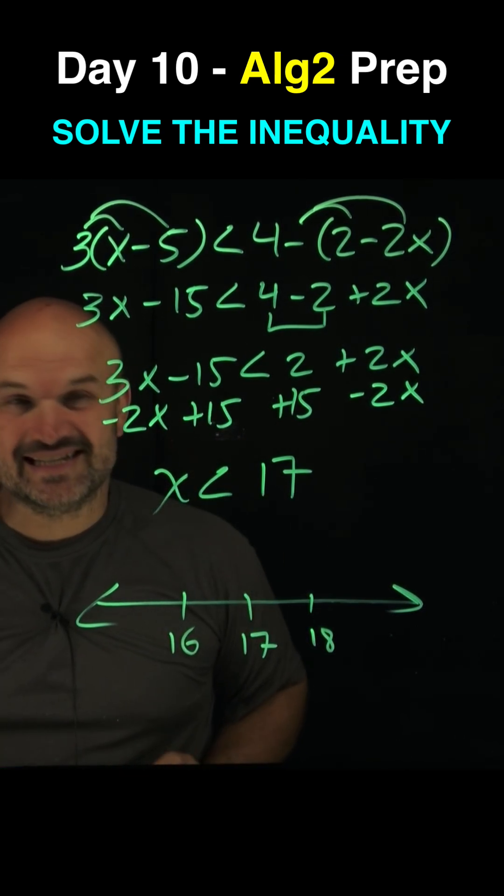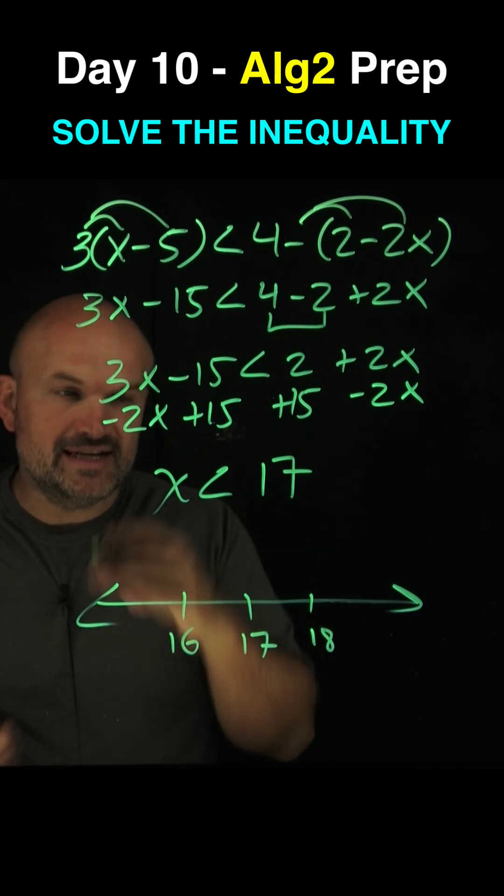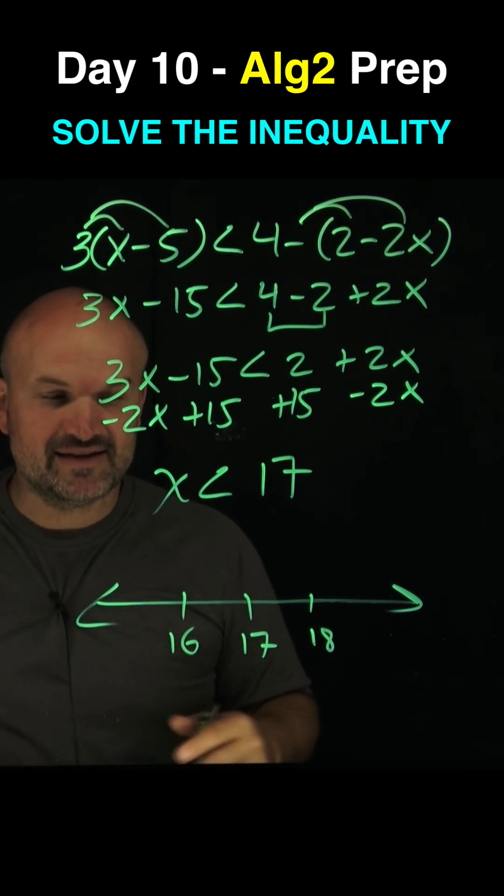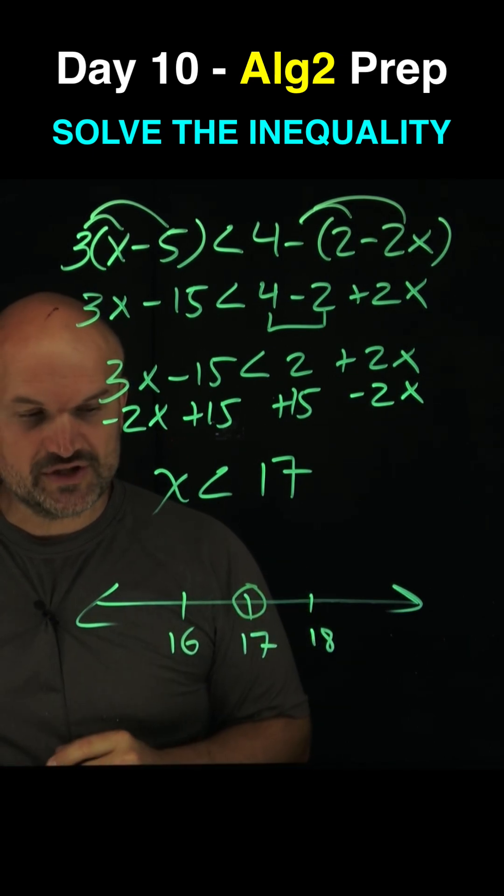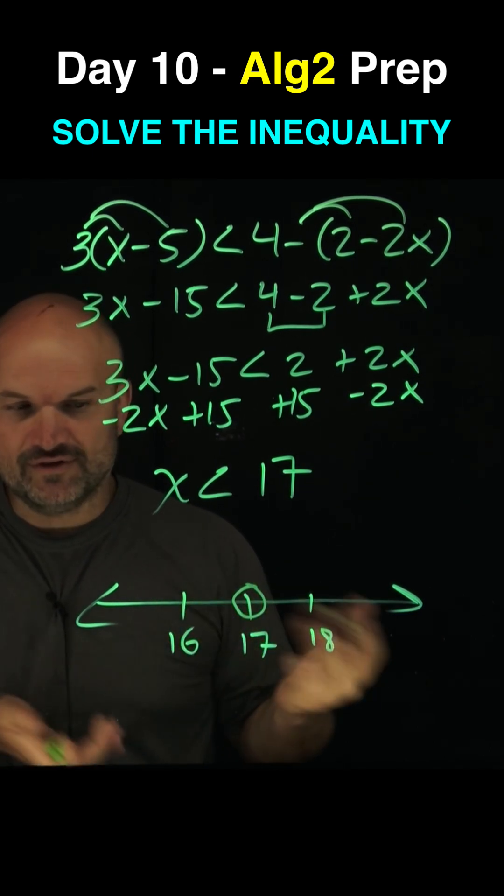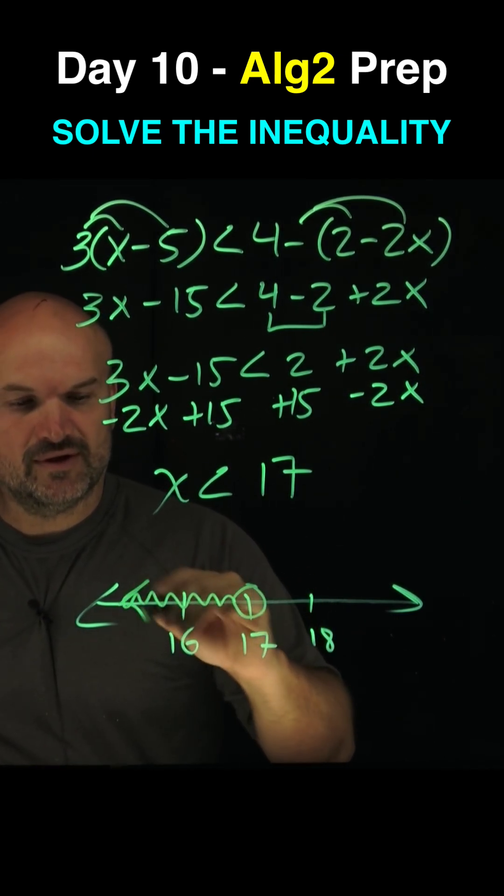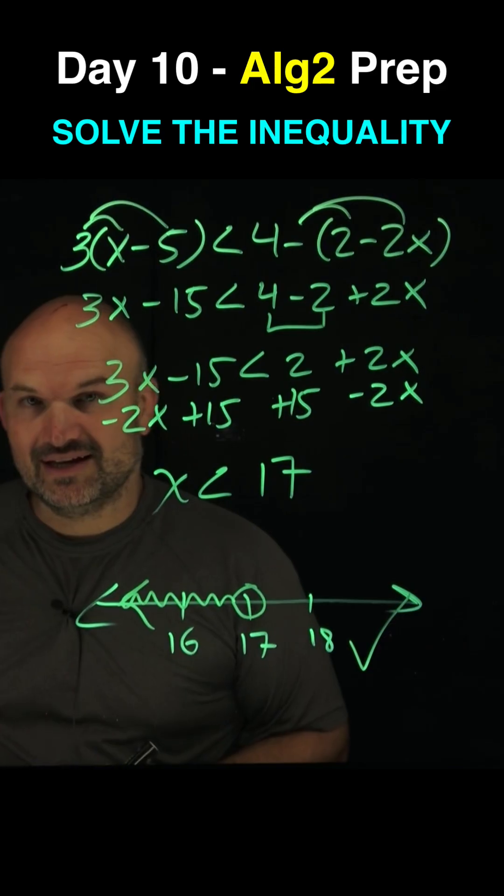Now this is saying x is less than 17, or all the solutions to this inequality are going to be numbers that are less than 17, not equal to. So if it's less than, not equal to, it's going to be an open circle. And then we just need to determine, well, all the numbers that would be less than 17 are all going to be going to the left. Now you're ready for day 11.